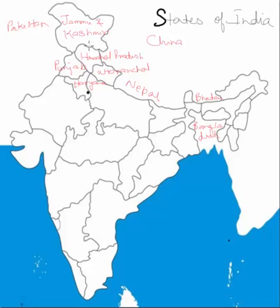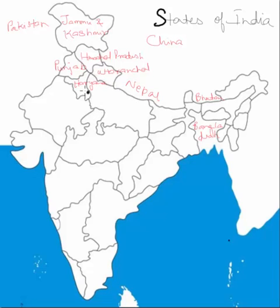Now we'll cover the eastern part, which also comprises about four states. There's one large state in the east that borders Haryana, has Uttaranchal to the north, and Nepal to the north as well — this state is Uttar Pradesh.